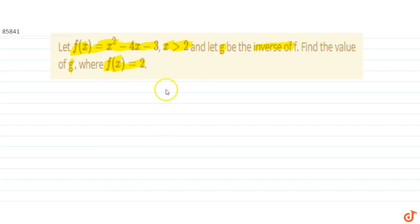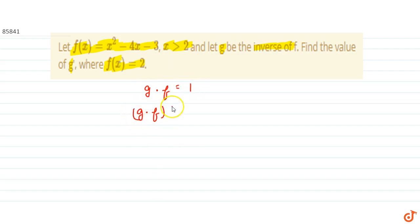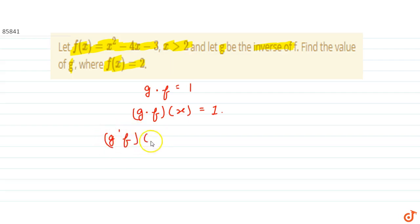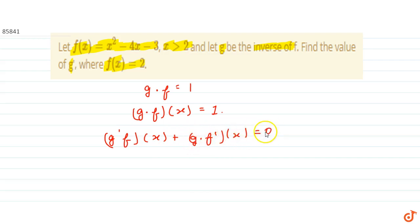Since g is the inverse of f, we have g into f equals the identity, that is 1. So g into f of x equals 1. Now differentiating this using the product rule, we get g' into f of x plus g into f' of x equals 0.